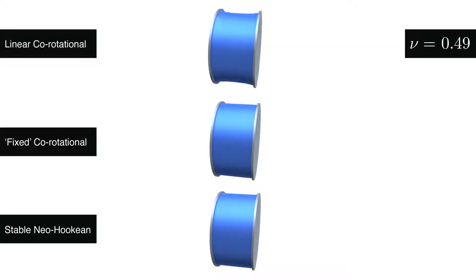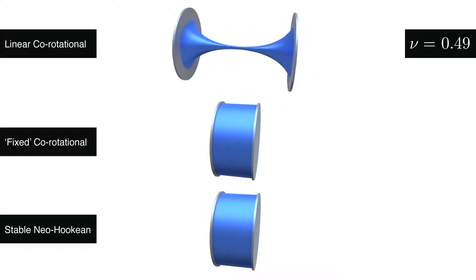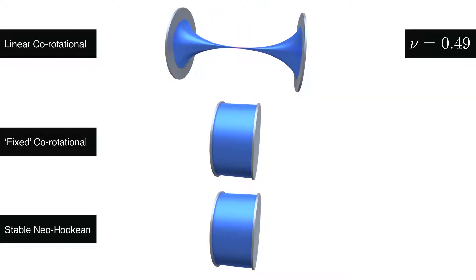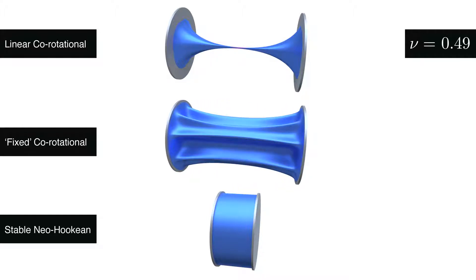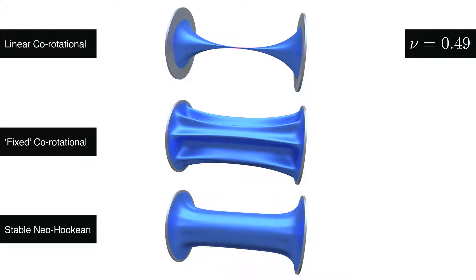We begin by exploring the behavior of common hyperelastic models on a cylindrical stretch test. The standard co-rotational formulation exhibits extreme volume loss under tension, while the fixed co-rotational model produces distinct artifacts when stretched. In contrast, our proposed stable Neohookian model produces an artifact-free simulation with good volume-preserving behavior.